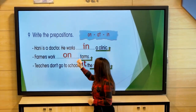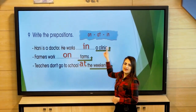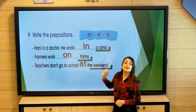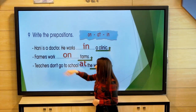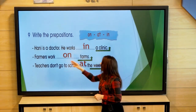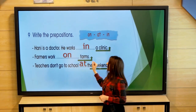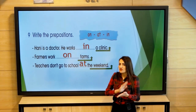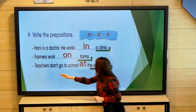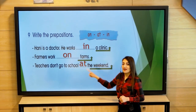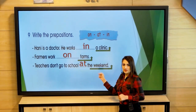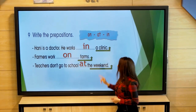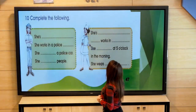Mr. Haani is a doctor. He works in a clinic. For farms, we always use 'on' when we talk about farms — always, don't change it. Teachers don't go to school at the weekend. When we use the word 'weekend', the right preposition is 'at'.